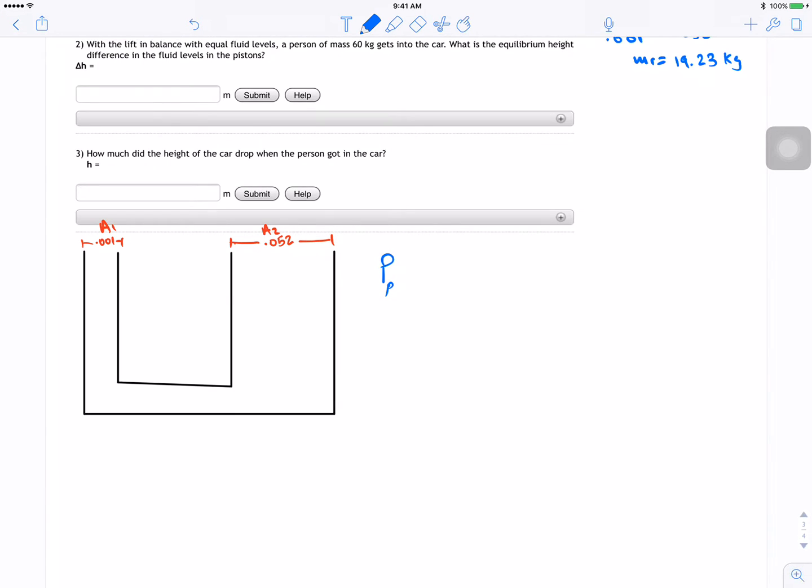So pressure due to the person is going to be equal to the force of the person divided by the area, A2, because he went in the car. So the force is going to be just M person G.